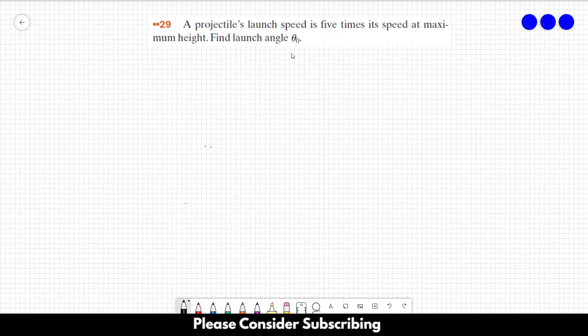Number 29. A projectile's launch speed is 5 times its speed at maximum height. Find launch angle theta.